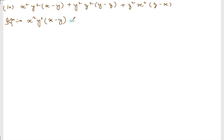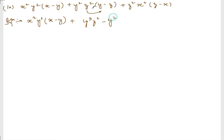Let us take x minus y common. So, y² into y gives y³, z², y² minus y² into z gives y² z², z² into z gives z³. Plus z² into z gives z³, x² and plus into minus gives minus z² x³.